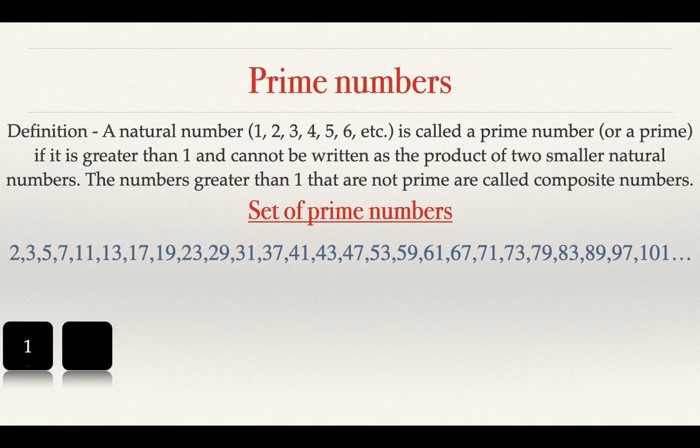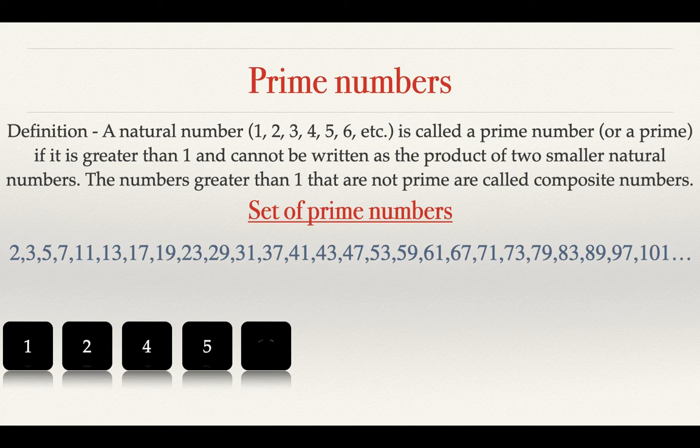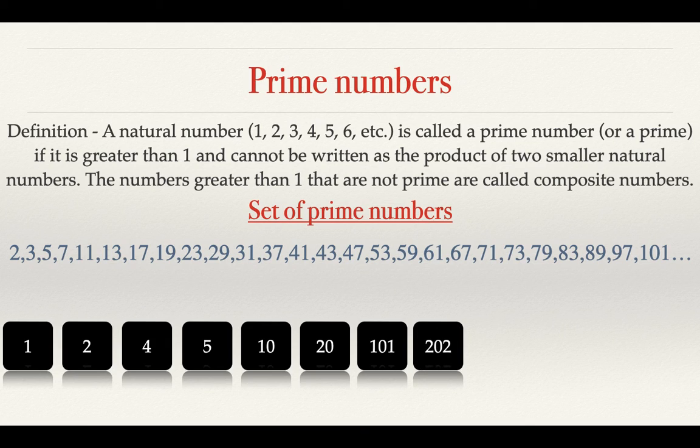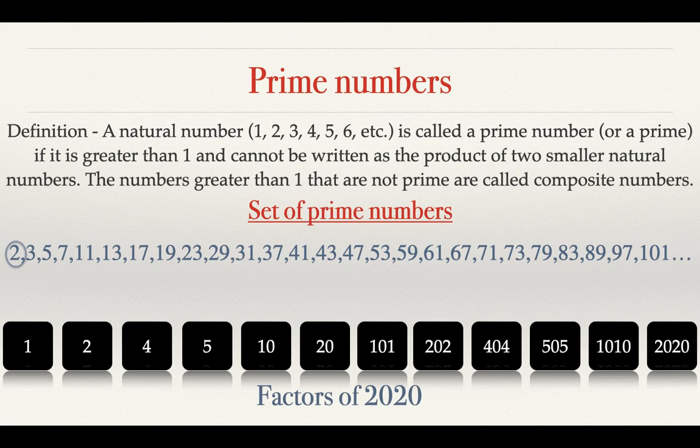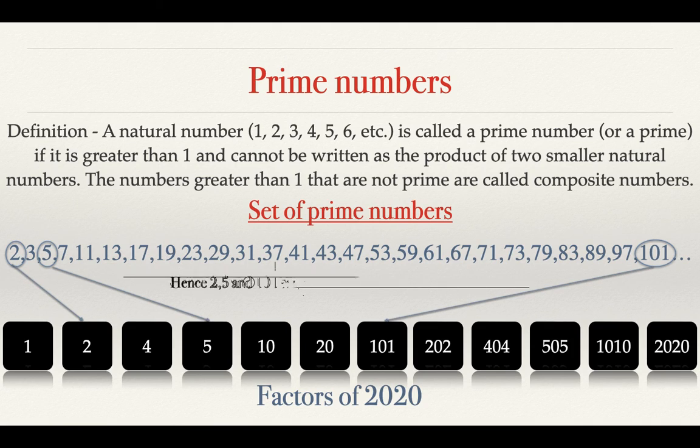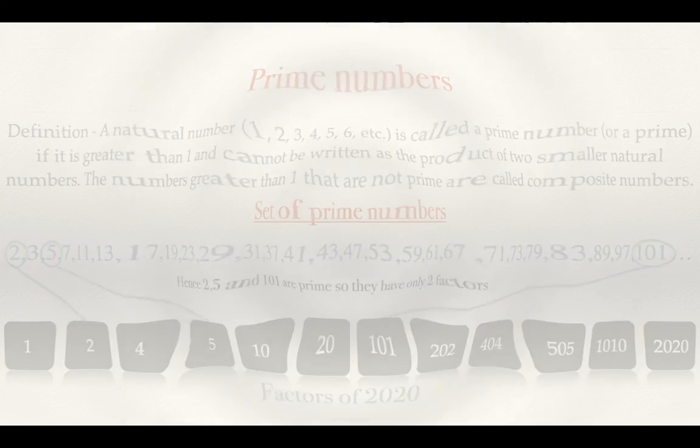What are the set of prime numbers? This is basically the set of prime numbers from 2 to 101. Now we will list the positive integer factors of 2020 because we have to find the number of prime numbers. Now let's look at the numbers in the factors of 2020 that have 2 factors. These are the factors of 2020: 2, 5, and 101 are prime and they have 2 factors, so they won't be in our set.